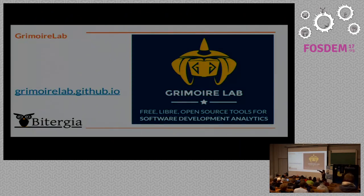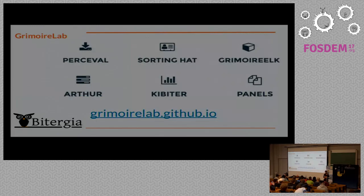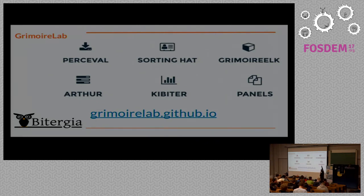If you want, go to the GrimoireLab webpage for much more information. Let's go one tool at a time. I already presented Perceval — it goes to repositories, retrieves information, and produces JSON documents. Then we have GrimoireElk, which takes raw indexes and also manages Perceval if needed and uploads information.